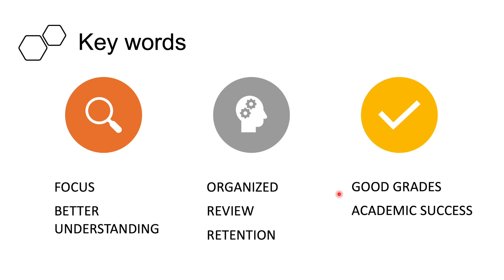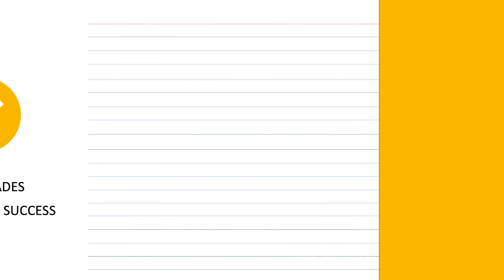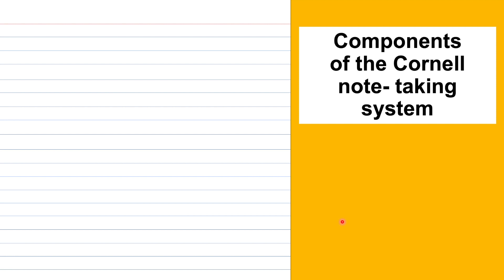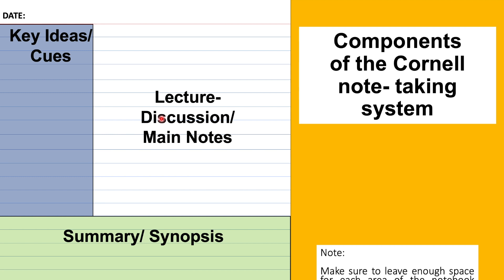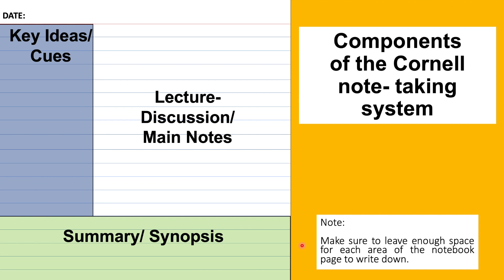Now let's check the components of the Cornell note-taking system. We have the date - it's important that we put the date. The lecture discussion main notes, the key ideas or cues area, and the summary or synopsis area. Just make sure to leave enough space for each area of the notebook page to write down, because it's not okay if the notes are congested.